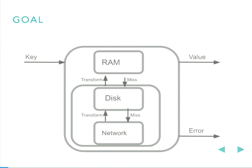So a key comes in. We check RAM. If it's there, we return the value. If it's not there, we look on disk. If it's on disk, we write back to RAM and return the value. If it's not on disk, we hit the network. If that fails, the whole thing fails. If it succeeds, we write to disk, write to RAM, and return the value.